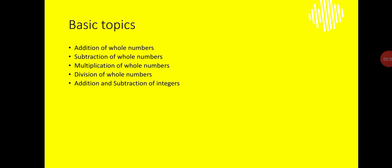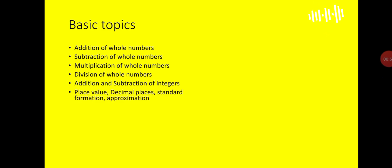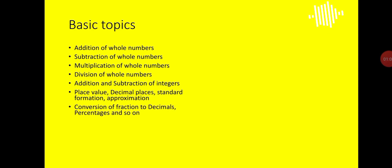Then addition and subtraction of integers — that's negative numbers, like negative 5 plus positive 2 and so on. These topics have been arranged in increasing level of difficulty, so you should know them in the order stated. If there is any topic ahead that you do not know, you need to learn it before the subsequent ones. The next topic is place value, decimal places, and standard form.